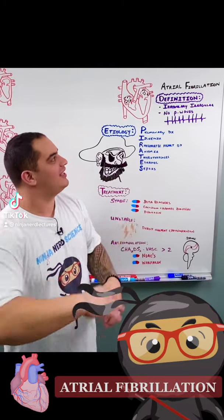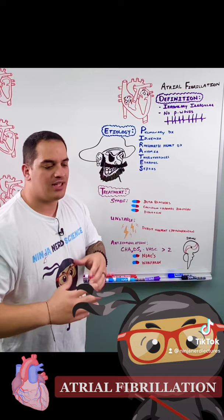What's up Ninja Nerds? In this video we're going to be talking about atrial fibrillation. How do we define it? It's when someone has an irregularly irregular rhythm with no visible P waves on their EKG.